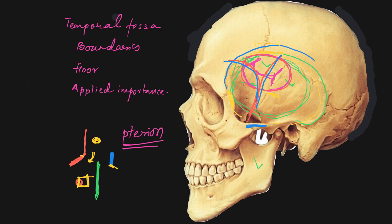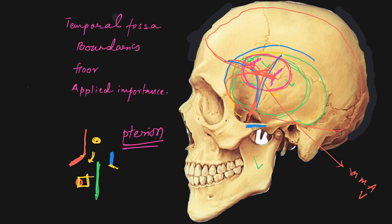Along with the middle meningeal vein, we also find a structure of the brain here — the stem of the lateral sulcus. That point is known as the sylvian point. So overlying the pterion we find three structures: the middle meningeal artery and vein, and the lateral sulcus of the brain.